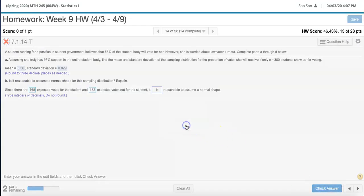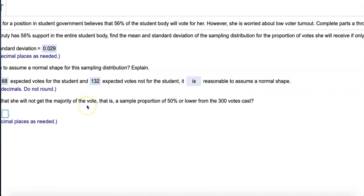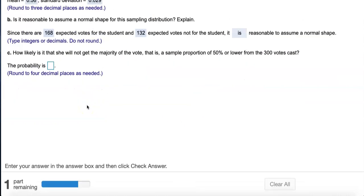This is fantastic. We're going to use normal distribution to find some probability. Part C says: how likely is it that she will not get the majority of the vote? What do they mean by majority? That means winning over 50%. So what's the chance that she will not get the majority of the vote—that is a sample proportion of 50% or lower from the 300 vote cast.